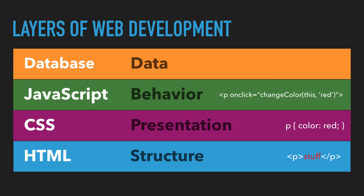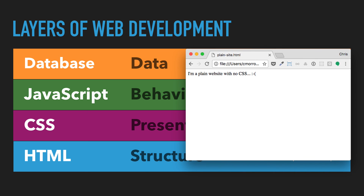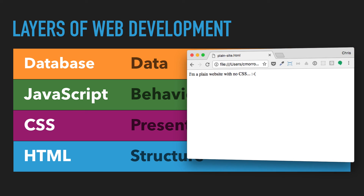Those top three layers are all optional. The only thing that's required is HTML. Without CSS, JavaScript, and data, it's not as exciting a web page, but essentially you could have a web page with only HTML — it would just be kind of boring. Here's an example: 'I'm a plain website with no CSS.' With no styles, you're going to get just plain black text on a white background.